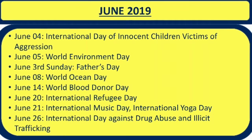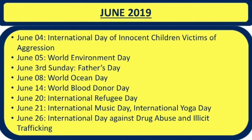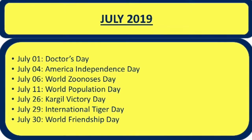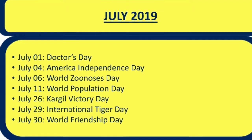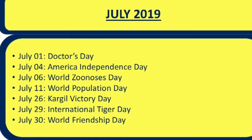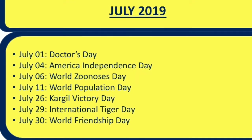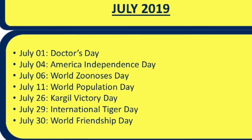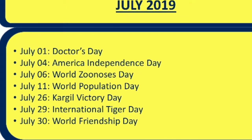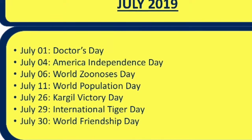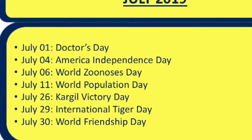In July 2019 there are very few days. 1st July: Doctor's Day. 4th July: America's Independence Day — these are common questions because our Independence Day is 15th August, so America's on 4th July is a comparison point. 6th July: World Zoonoses Day.